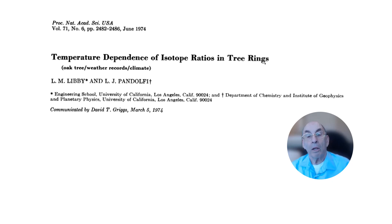Pioneering work by Leona Marshall Libby and L.J. Pandolfi at UCLA showed that the oxygen-18 to oxygen-16 ratio, the carbon-13 to carbon-12 ratio, and the deuterium to hydrogen ratio in the wood of tree rings depends on the air temperature during the time that the tree ring was being formed. By comparing these stable isotope ratios with temperature measurements from a nearby weather station, Libby and Pandolfi were able to calibrate their tree ring thermometer for the tree they were studying.